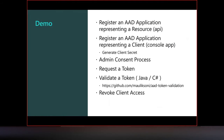For the demo, here's what we'll do: register an AAD application representing the resource — the API; register another application representing a client (repeatable for any number of clients); generate a client secret; go through the consent process; use Postman to request a token; review token validation code; and see how to revoke client access.